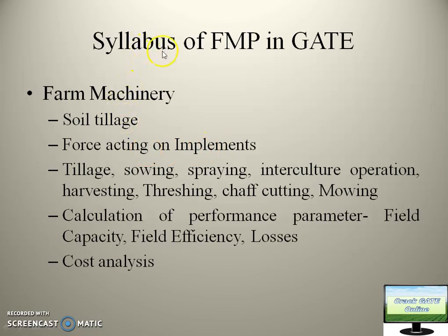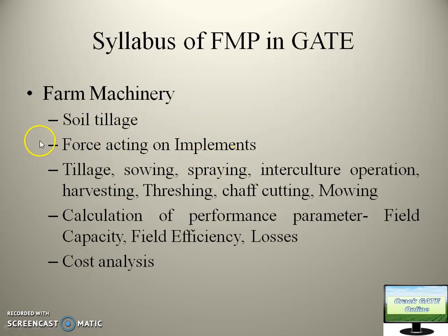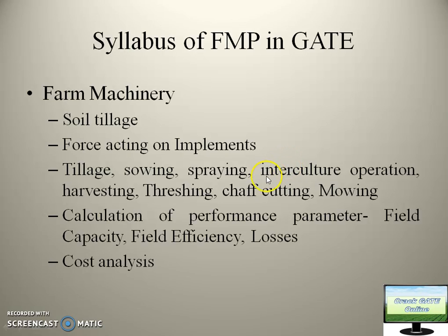This is the syllabus of FMP in GATE — please pay attention here. The first section is farm assembly and the second is farm power. Inside farm assembly, soil tillage covers different implements like cultivator, rotavator, and moldboard plough. When these implements operate inside the field, forces and movements come on the implement, and the calculation of those forces is in the GATE syllabus. The whole agricultural operations covered include tillage, sowing, spraying, intercultural operations, harvesting, threshing, and chaff cutting.